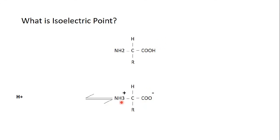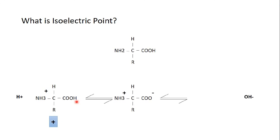When the amino group is protonated it holds a positive charge, but when the carboxyl group is protonated it will be deionized, and the amino acid overall will hold a positive charge. The opposite happens at higher pH, where hydroxyl groups are present. Both the amino and the carboxyl group will be deprotonated: the carboxyl group holds a negative charge while the amino group holds no charge, so the amino acid in general will hold a negative charge.